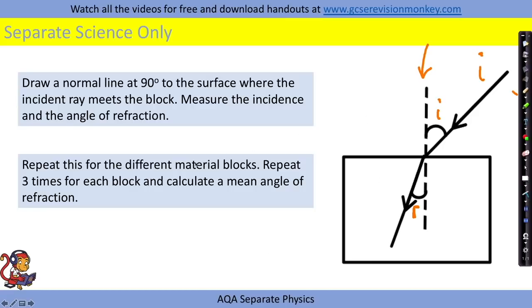So for this practical our independent variable is going to be the different material blocks that we're using. Our dependent variable is the angle of refraction and for this practical we're going to want to keep our angle of incidence the same so this is going to be a control variable.